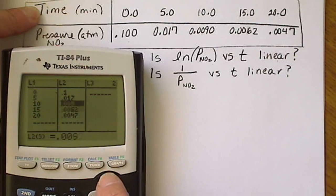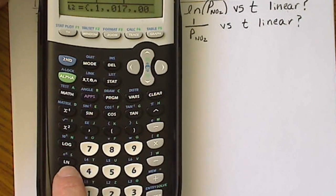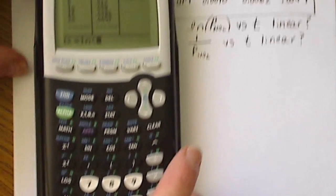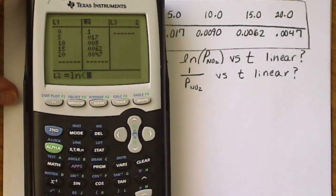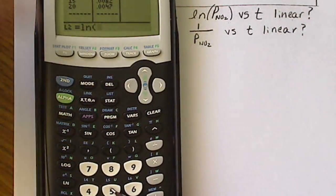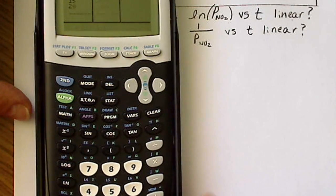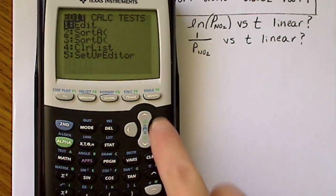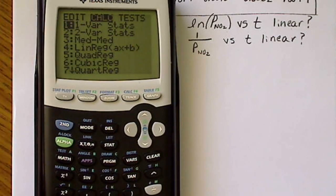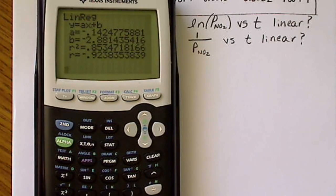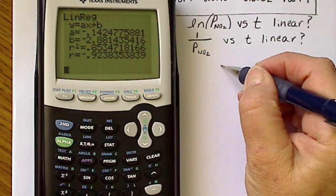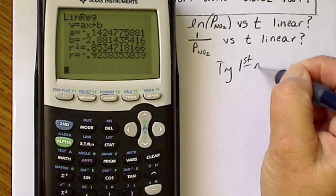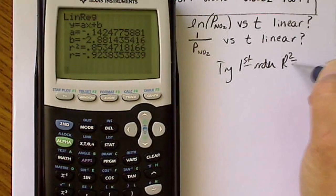Now I'm going to take the natural log of all those values. I go up to L2, hit the natural log button — I'm testing for first order, so that's the LN of the data. I tell it to take the natural log of L2 by hitting the blue button and selecting L2, and it will automatically compute that for all data points. Then I go to STAT, Calculate, and select item 4 for linear regression to test for first order kinetics.